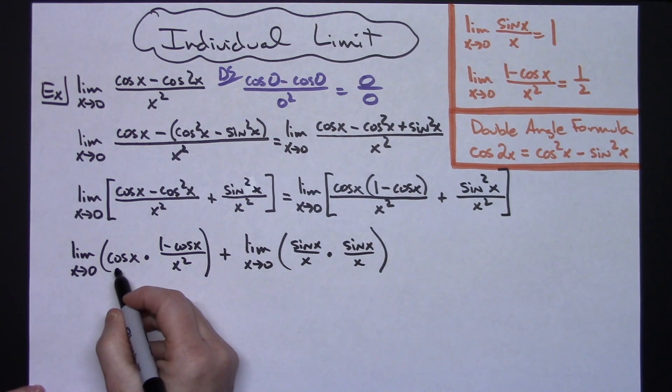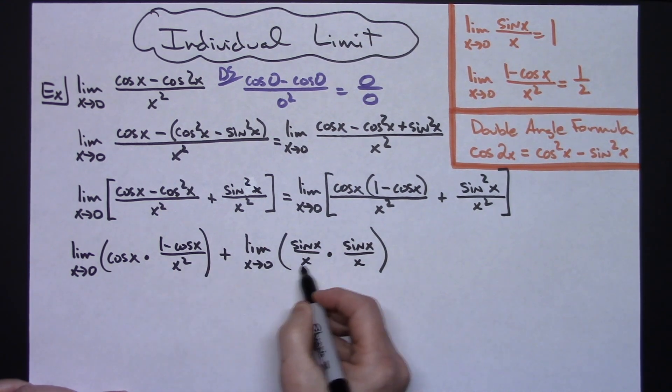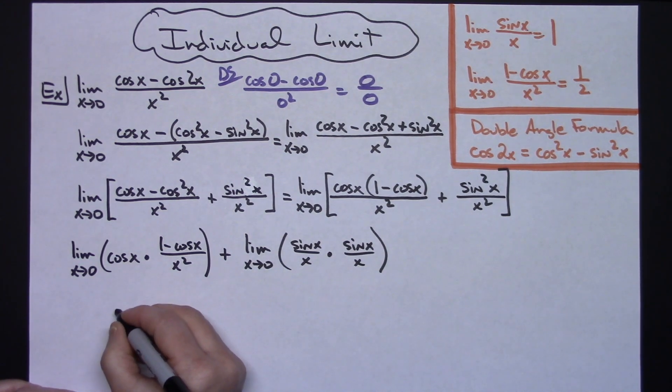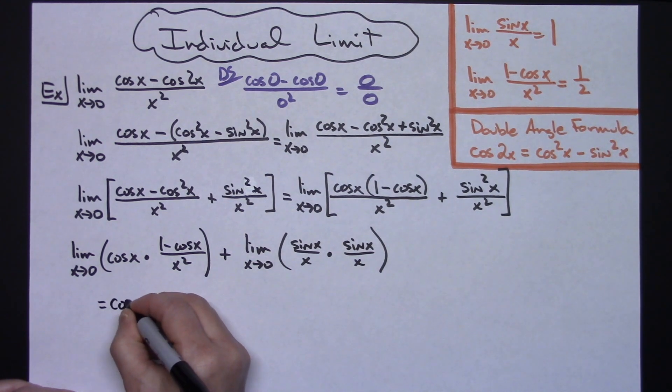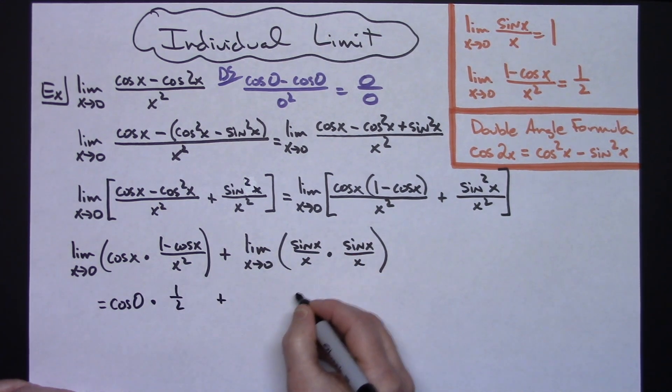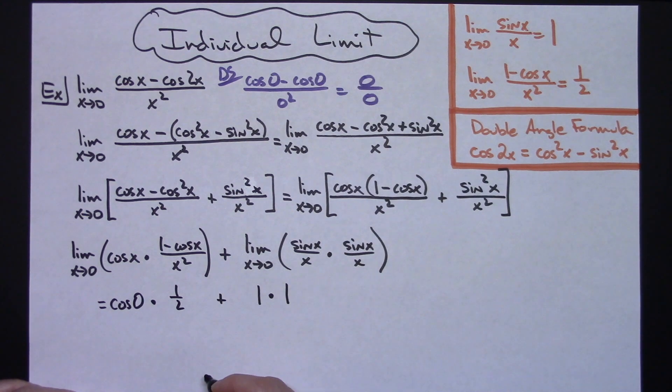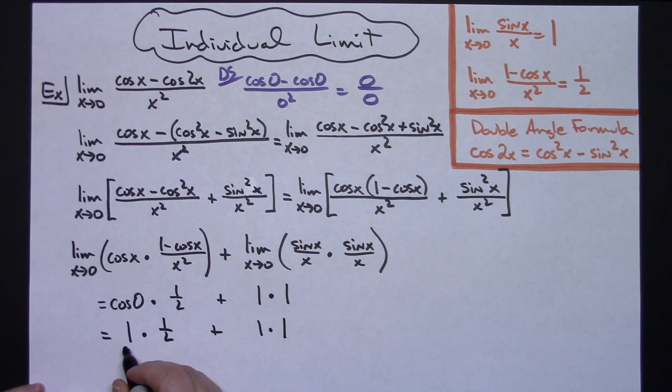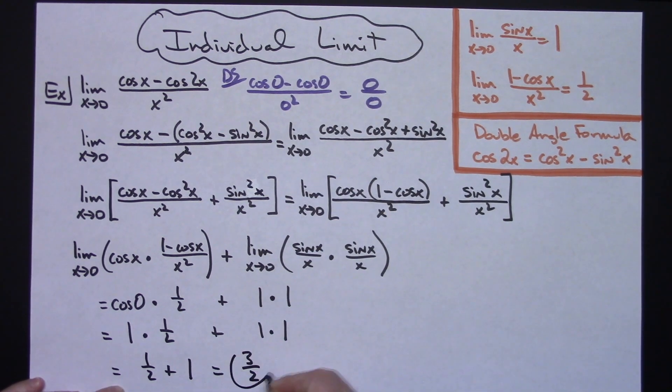So on this one, I'm going to be doing a direct substitution. This is our formula, this is a formula, and this is a formula. So doing a direct substitution, cosine of 0 times, we know this limit is 1 half, plus the limit here we know is 1 times 1. Cosine of 0 is going to be 1, so then I'm going to have 1 times 1 half plus 1 times 1. So that's going to be 1 half plus 1, which is going to give me an overall limit of 3 halves.